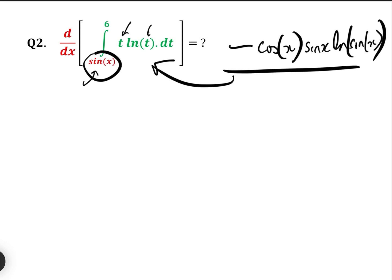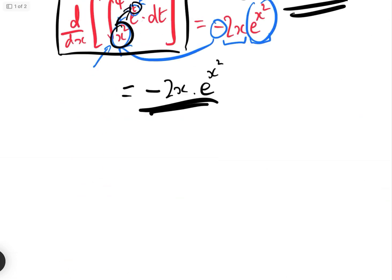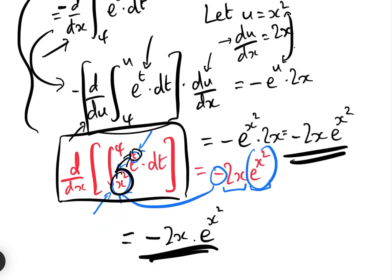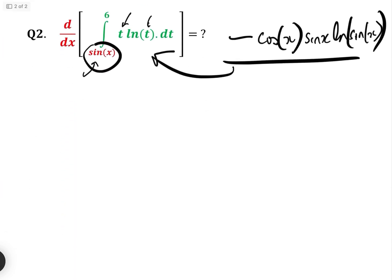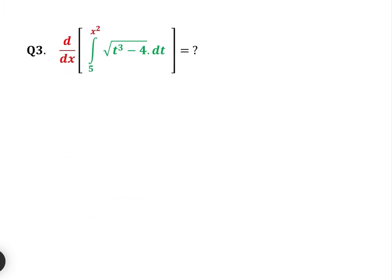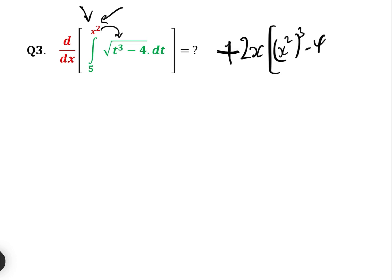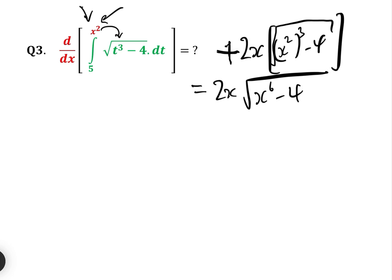Question 3: d/dx of the integral from a constant to x² of √(t³ − 4) dt. Rule 1: x² is on the correct side, so we have a plus — no minus needed. Rule 2: the derivative of x² is 2x. Rule 3: replace t by x² in the integrand, giving √((x²)³ − 4) = √(x⁶ − 4). So the answer is 2x·√(x⁶ − 4), again by inspection.